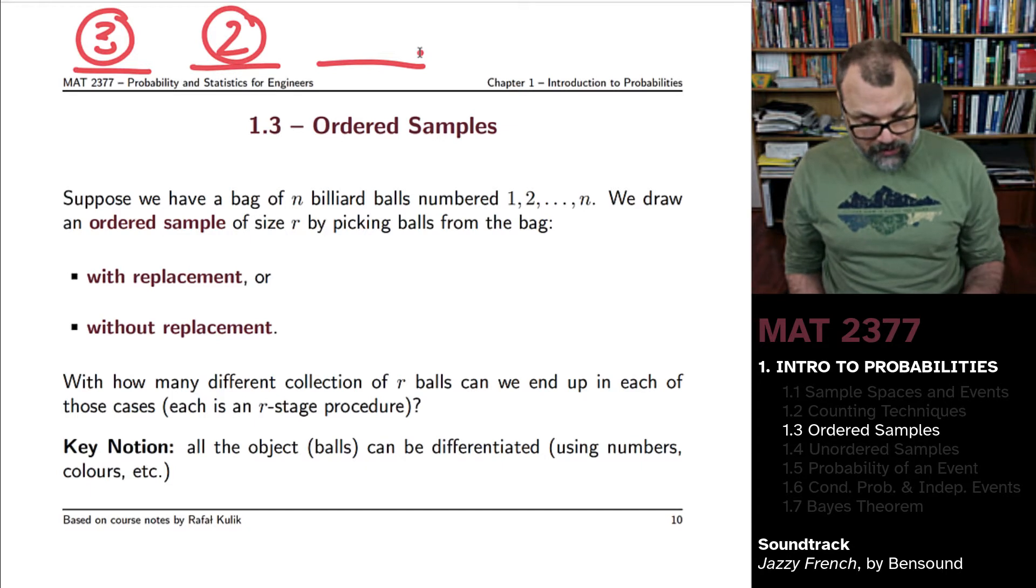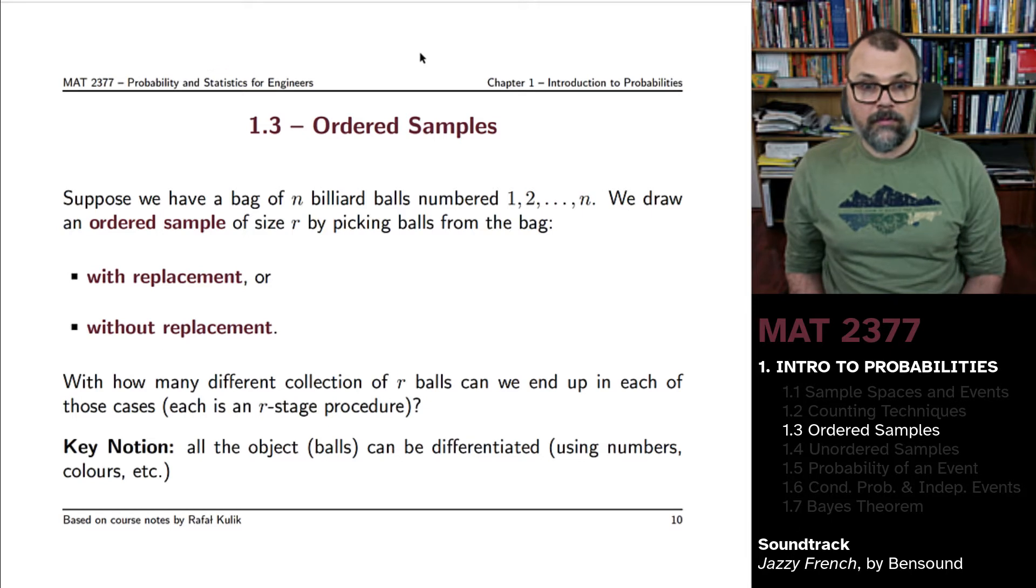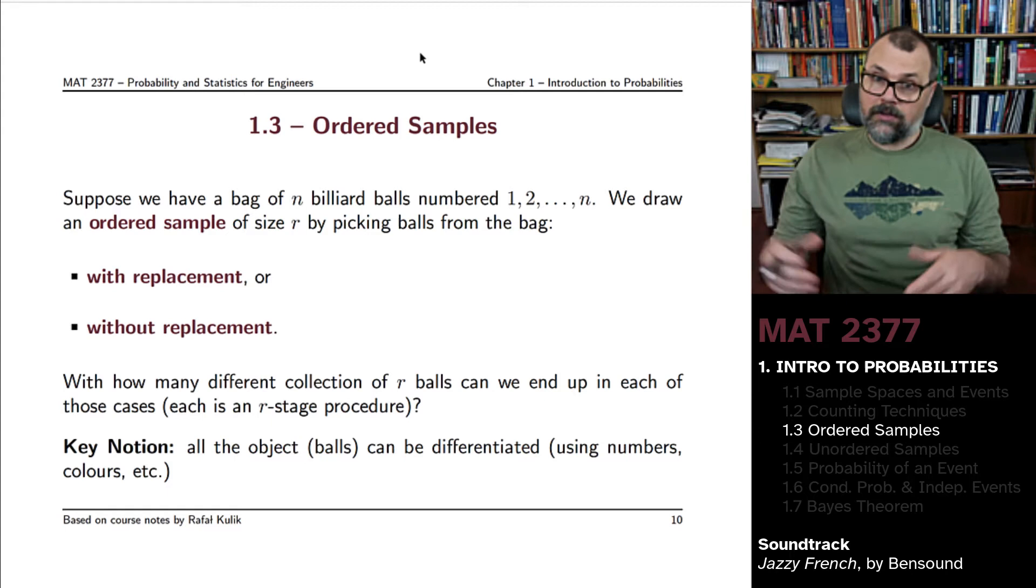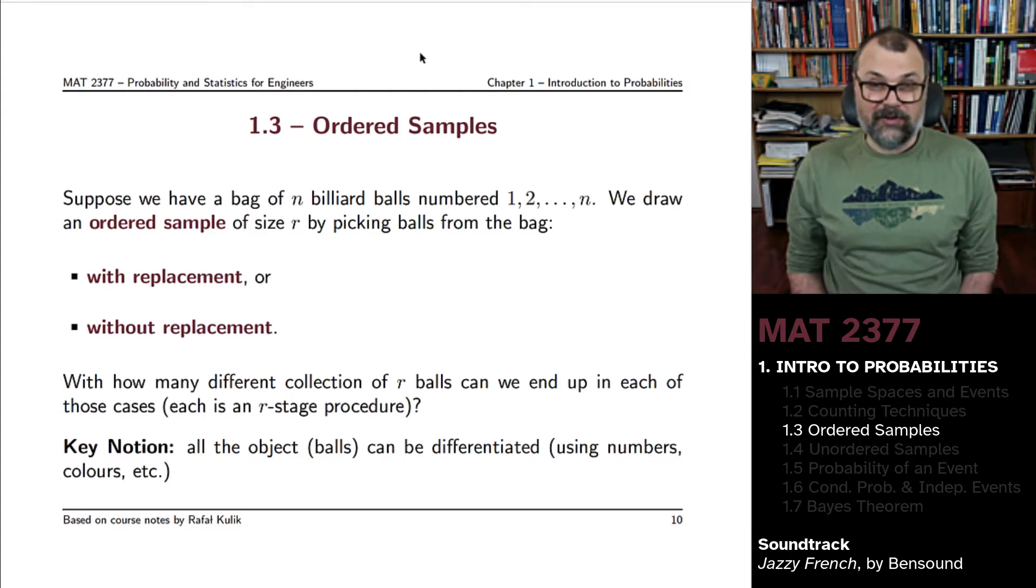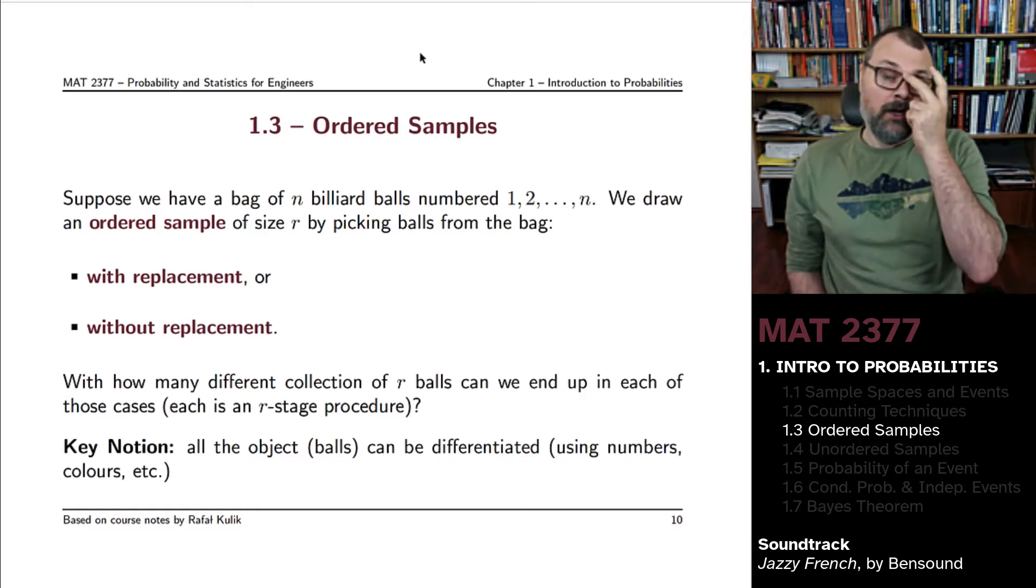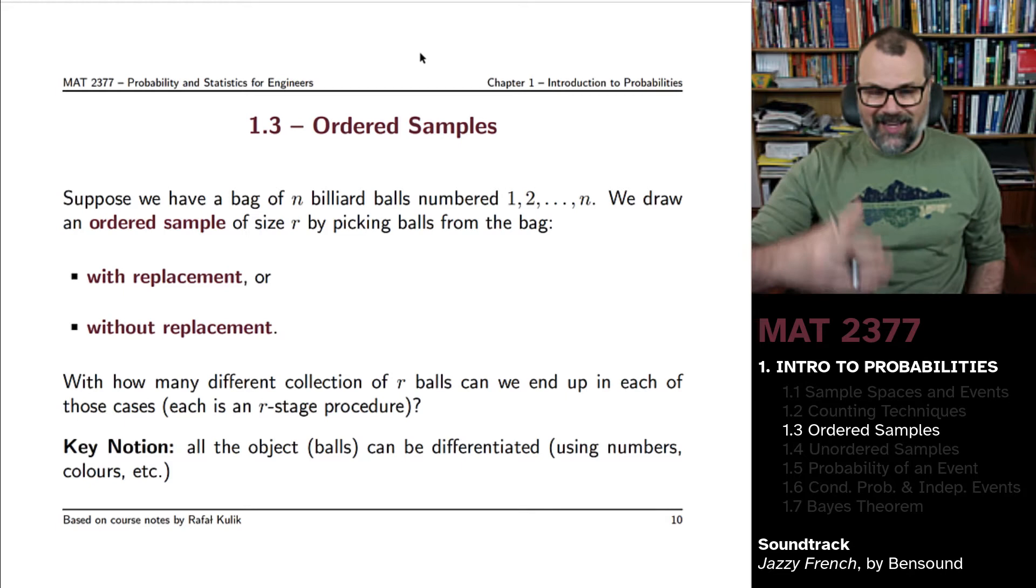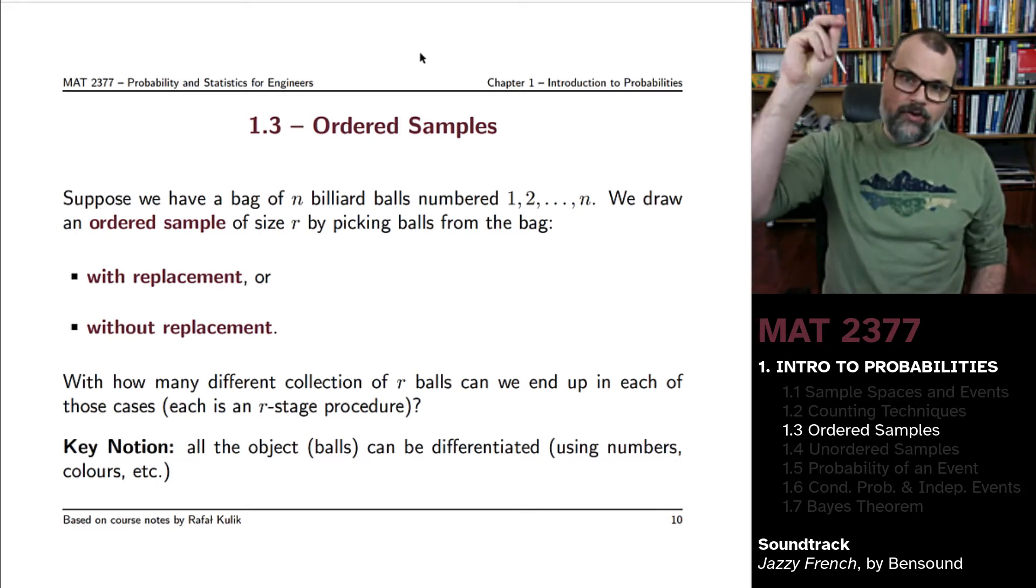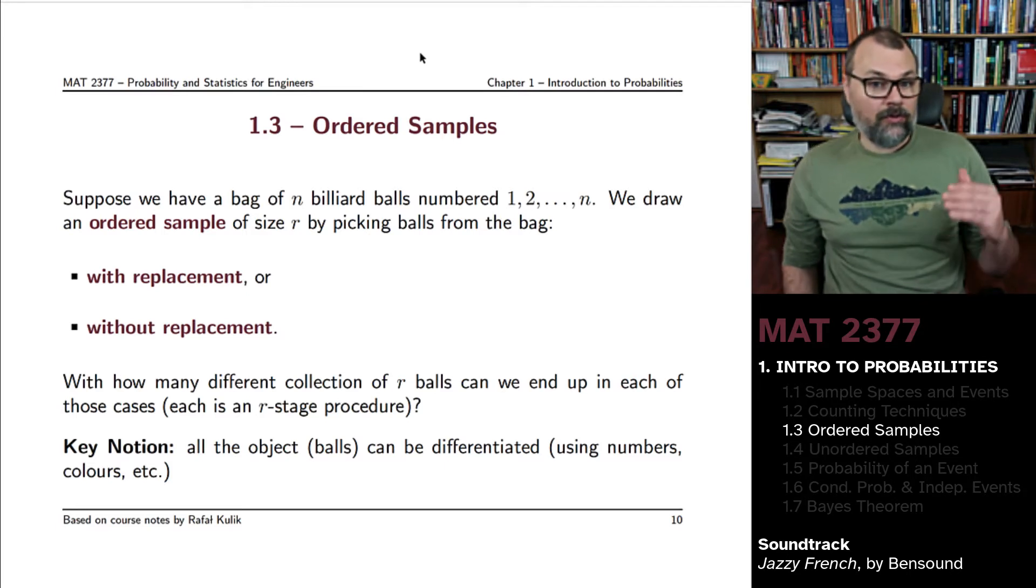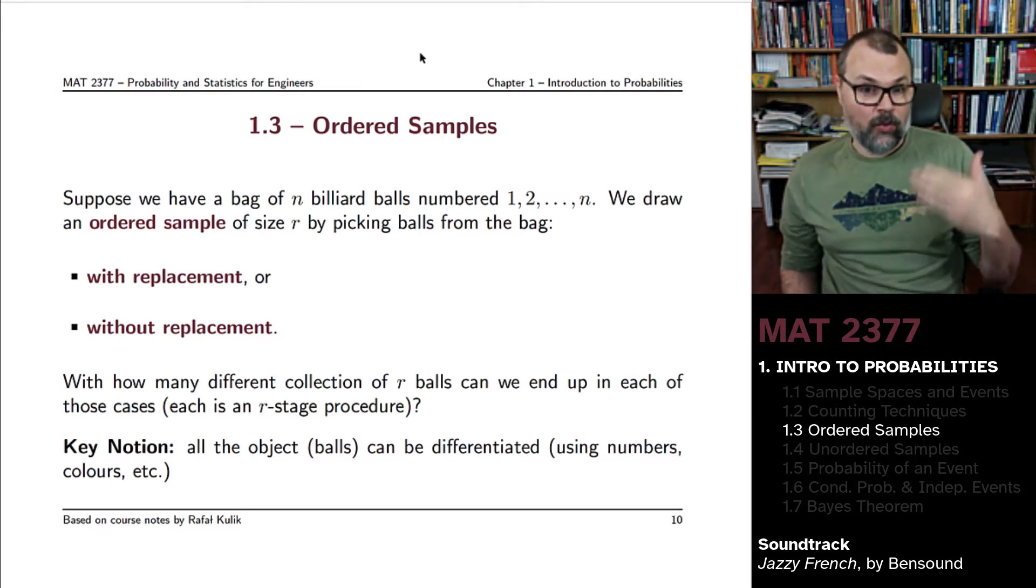One of the main questions we would ask here: how many different collections of R balls, samples of size R, can we end up with in each of these cases? So we view these as an R-stage procedure. You're drawing R times and the number of potential outcomes for each of the stages will be different depending on whether you're sampling with replacement or sampling without replacement.